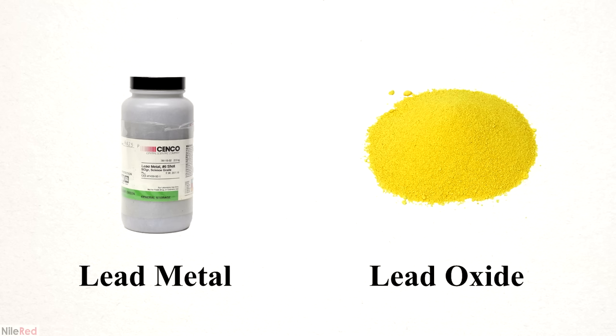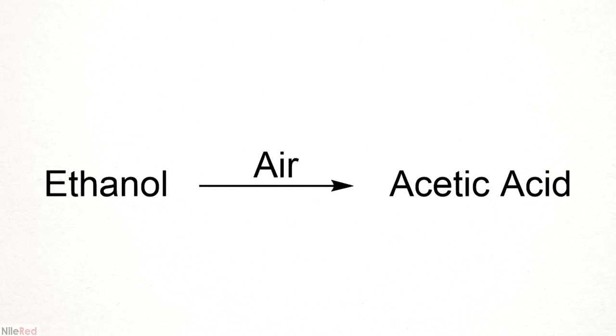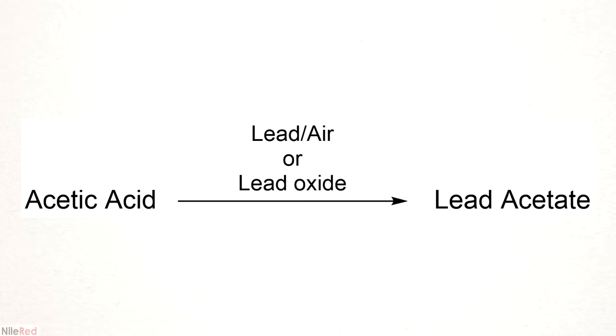Until the 19th century, lead oxide or lead metal was frequently added to bottles of port or wine. As they aged, if they were exposed to air, some of the ethanol could be slowly oxidized to form acetic acid. The acetic acid would then react with lead to form lead acetate.